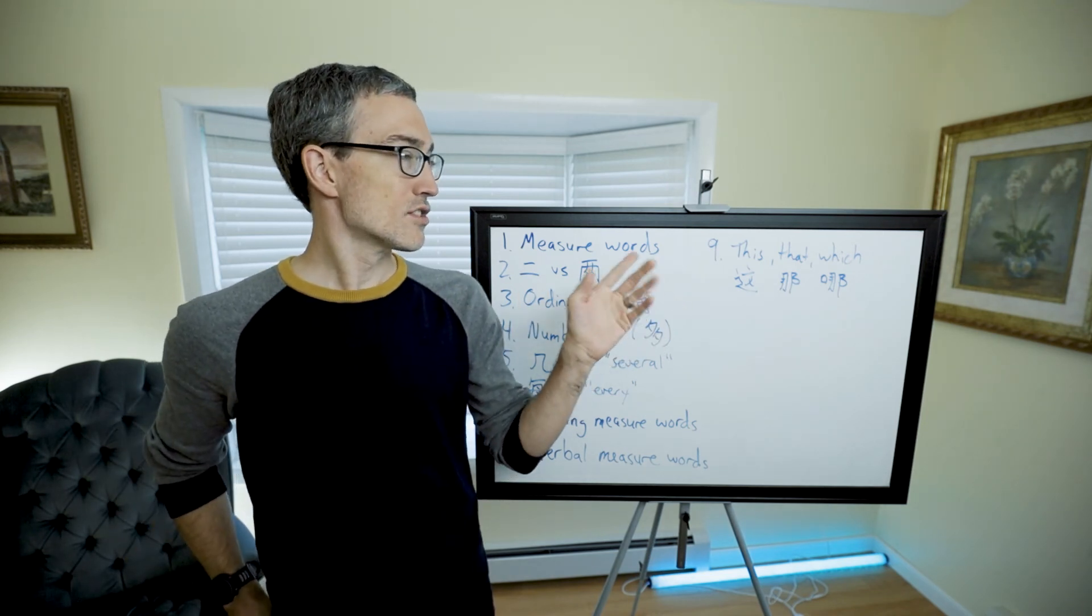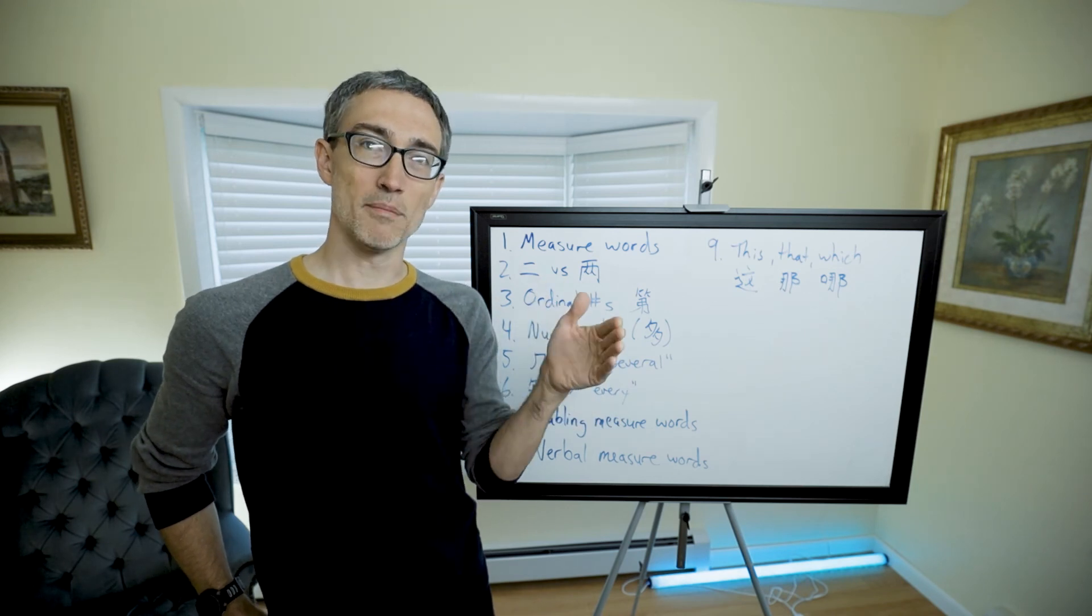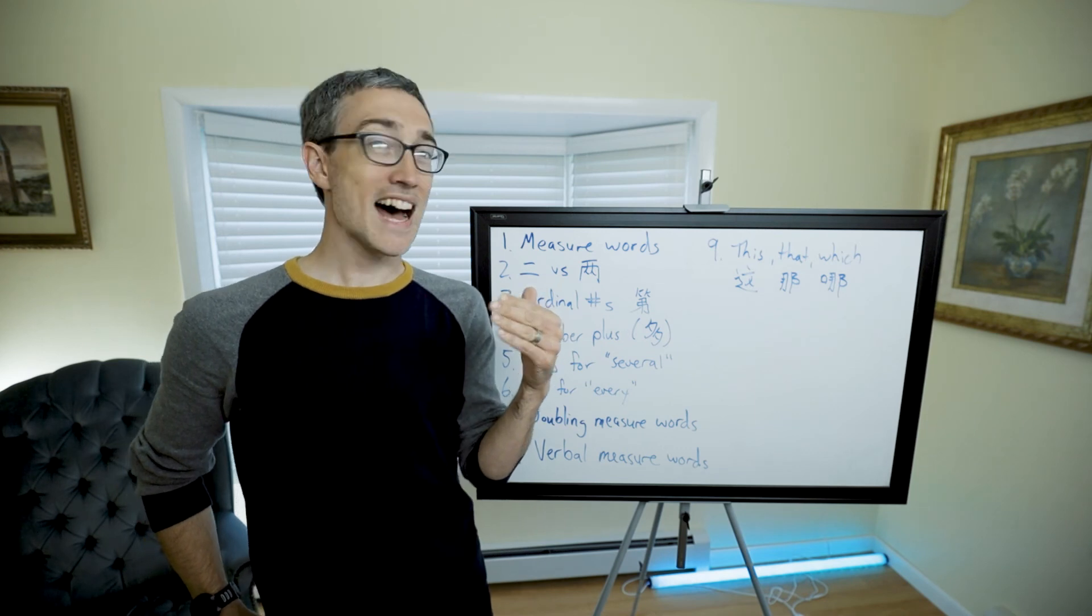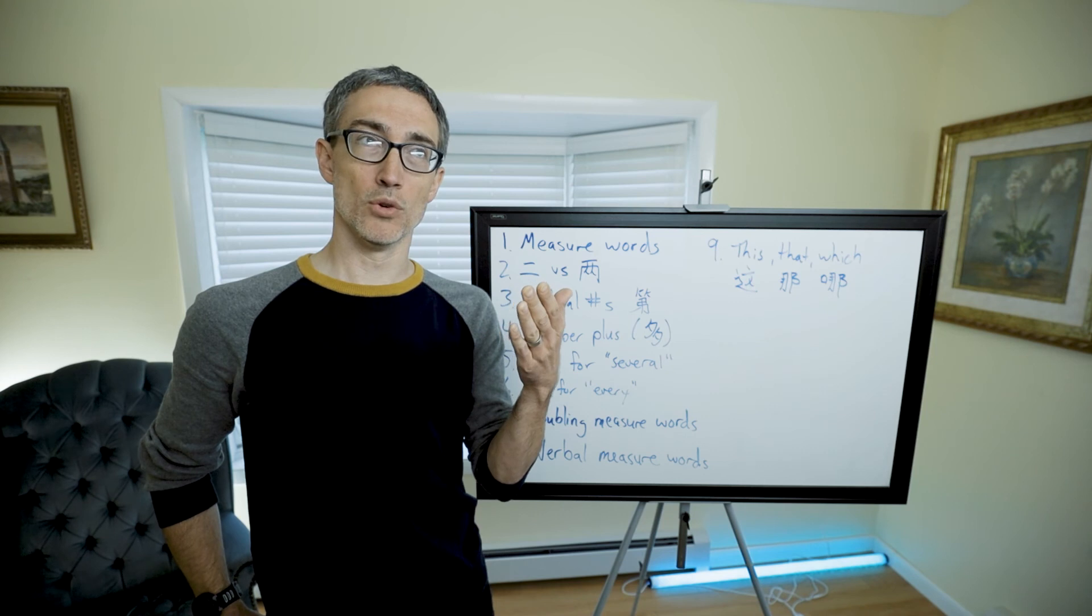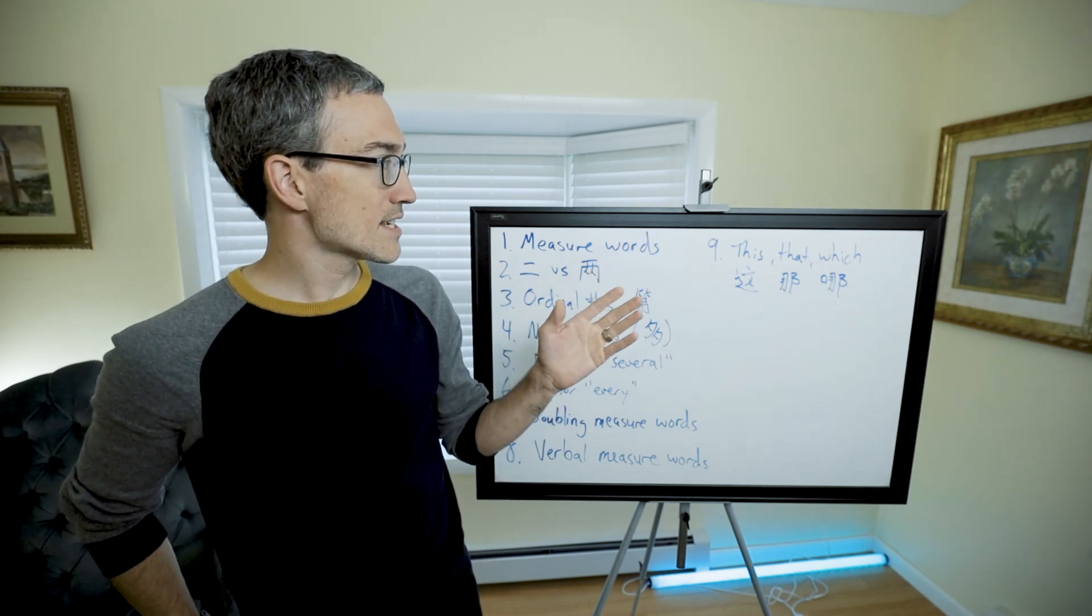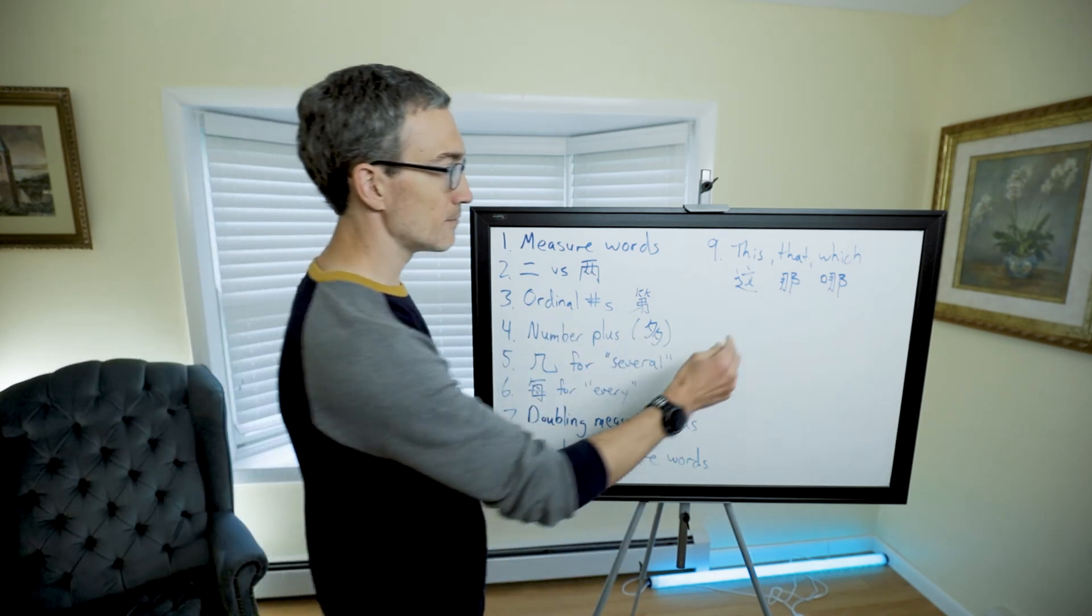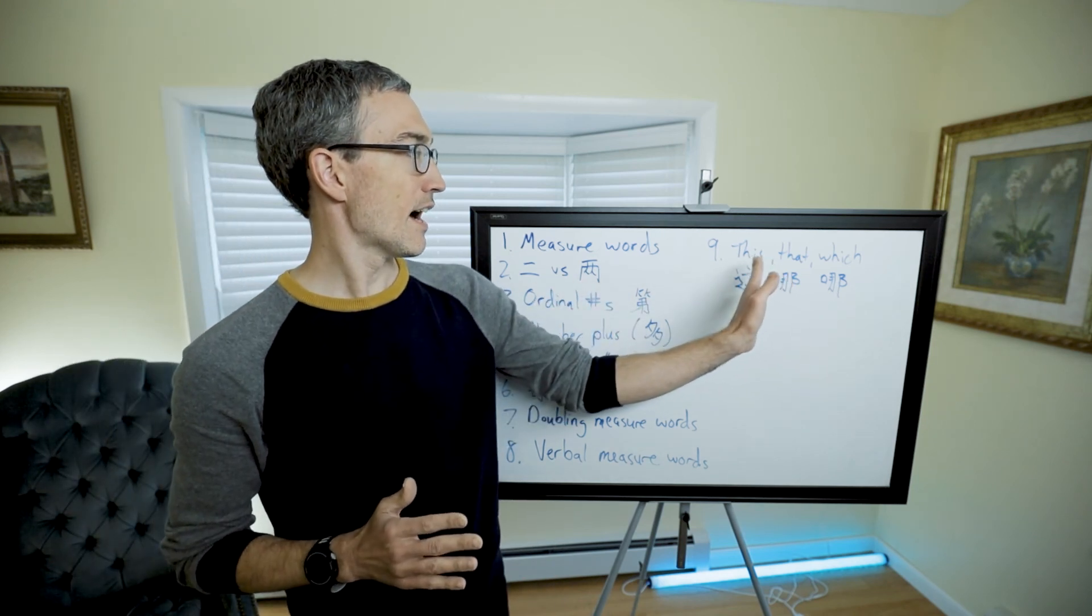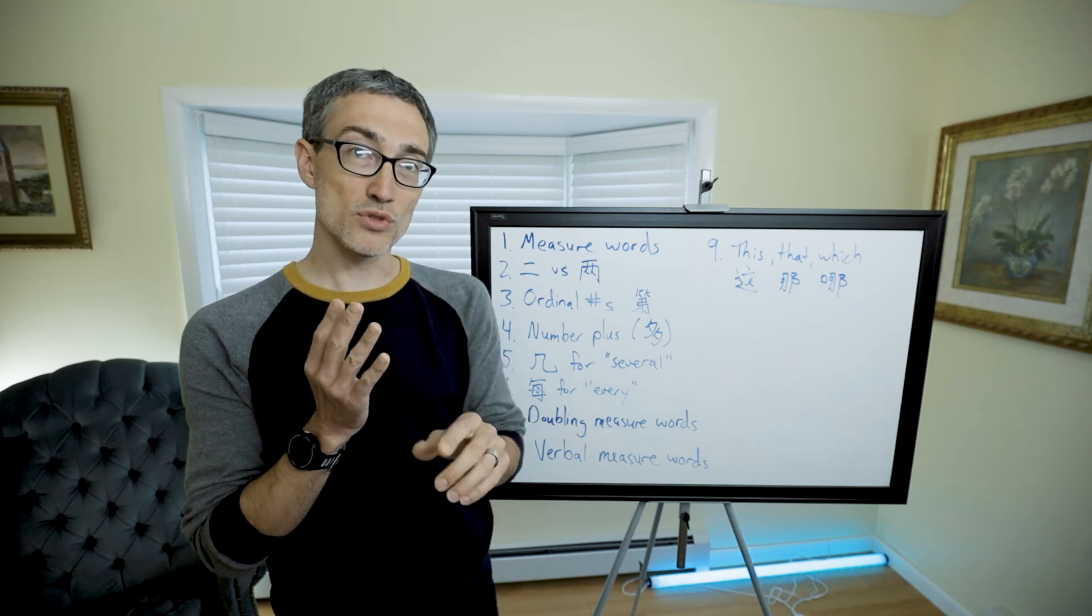For example, 这些饺子 (zhèxiē jiǎozi) means these dumplings. 这些饺子 (zhèxiē jiǎozi). If I say 那些球 (nàxiē qiú), it means those balls. If I say 哪些人 (nǎxiē rén), which people. So I just wanted to point that out.